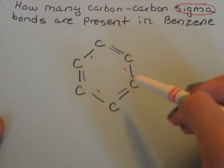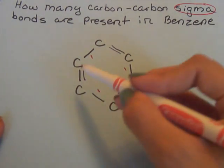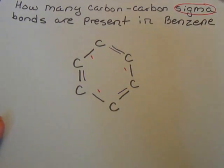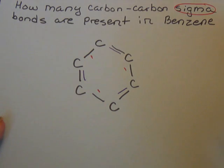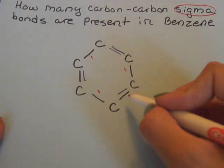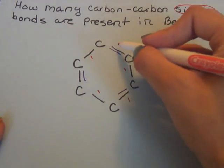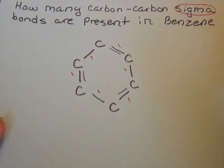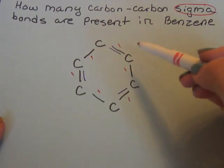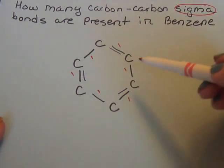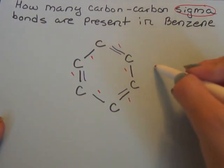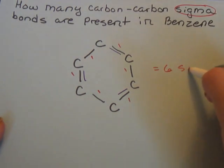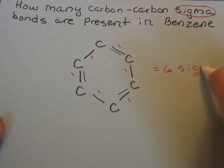And then we have the double bonds, but one of those is going to be considered a sigma bond. So then we're going to count again: one, two, three. Now we count all of them together — that equals six sigma bonds.